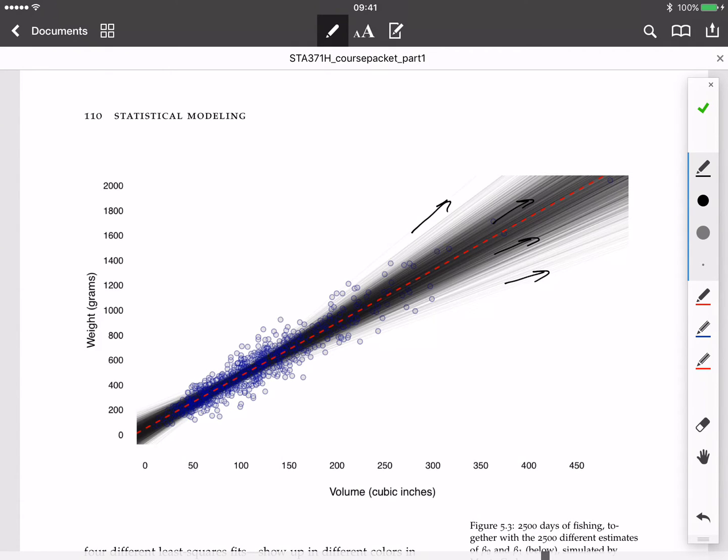And the scale of this fan, you can see this fan is kind of narrower in here and a lot wider out here. That visually is a depiction of the sampling distribution of the least squares estimator. You can just see that area.